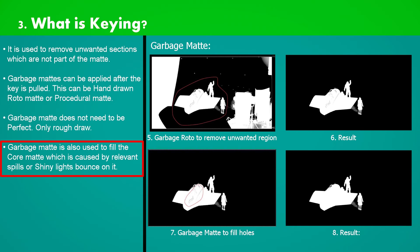This is key extracted using some keying methods also referred as keyers. In first image we have drawn roto shape to remove unwanted region as seen in image 6. This is the resulted image.